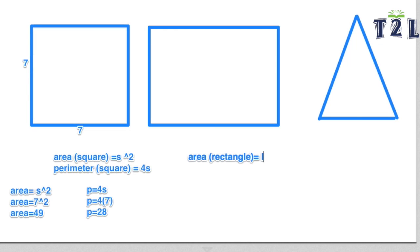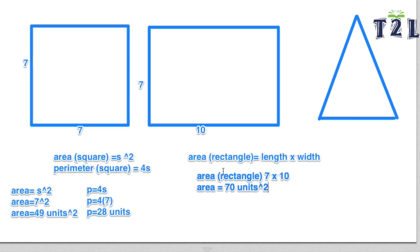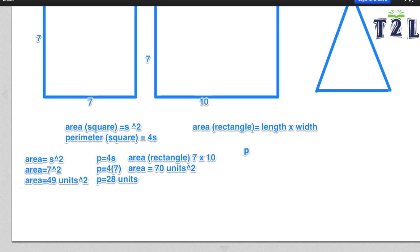So say we have a rectangle with a length of 10 and a width of 7. The formula for the area of a rectangle is length times width. So you're going to multiply 7 and 10 to get 70. The formula for the perimeter of a rectangle is 2L plus 2W. So 2 times 10 plus 2 times 7, and you're going to get 20 plus 14, which is equal to 34.